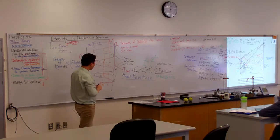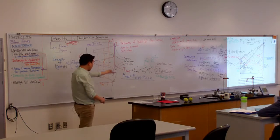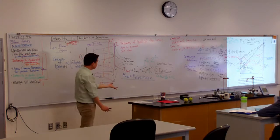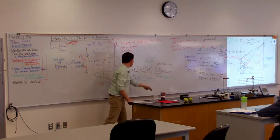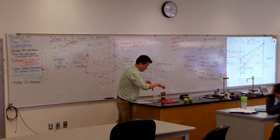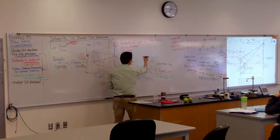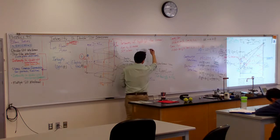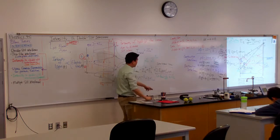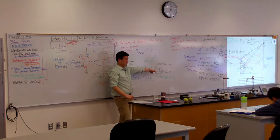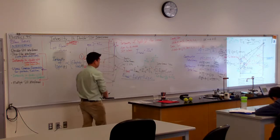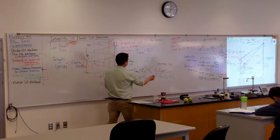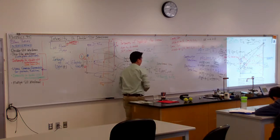The rest of the math I want to go over is working out this expression. I've already done a quarter of it — I have these two constant terms, so I can say my total intensity, the intensity pattern, is equal to 2I₀ plus some term I still have to work out.